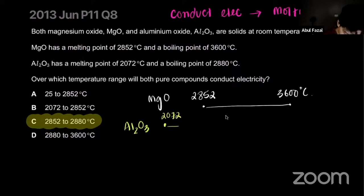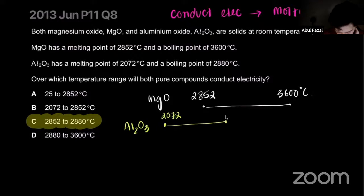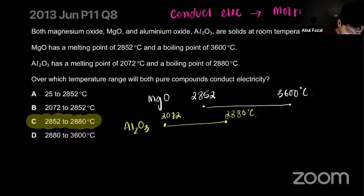The second compound has a melting point somewhere close to 2818 degrees. At what temperature range will both be liquid? They'll be liquid in this range.